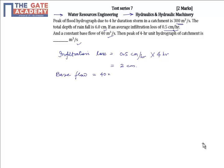Peak of DRH would be 300 minus 40, that is 260 meter cube per second. Rainfall excess...